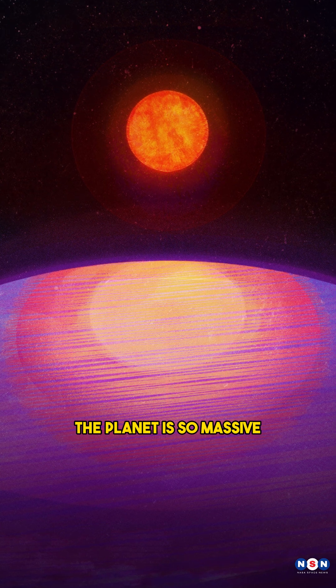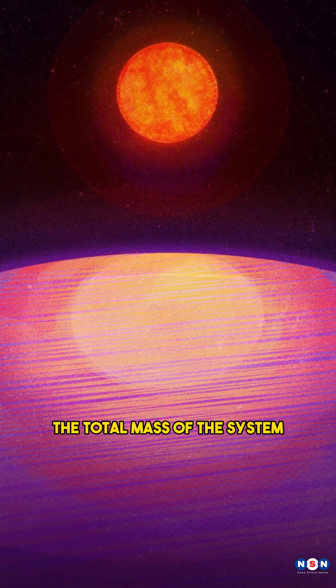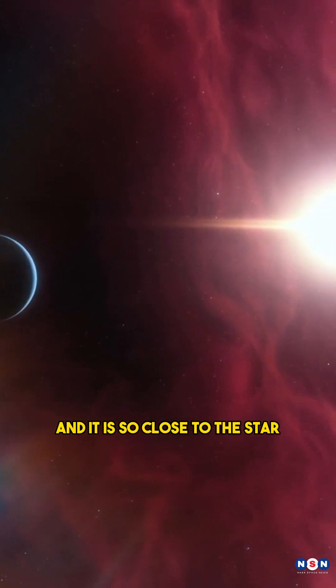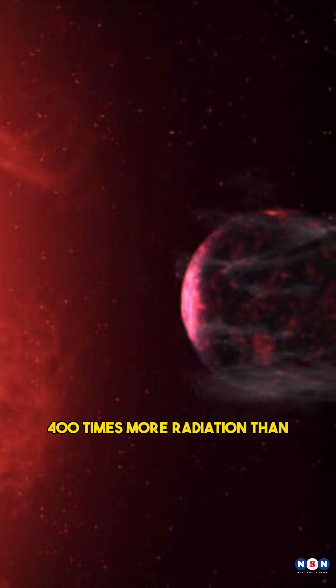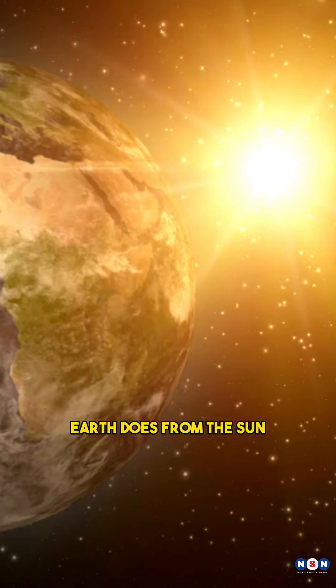The planet is so massive that it makes up more than half of the total mass of the system, and it is so close to the star that it takes only 3.4 days to complete one orbit, and it gets more than 400 times more radiation than Earth does from the Sun.